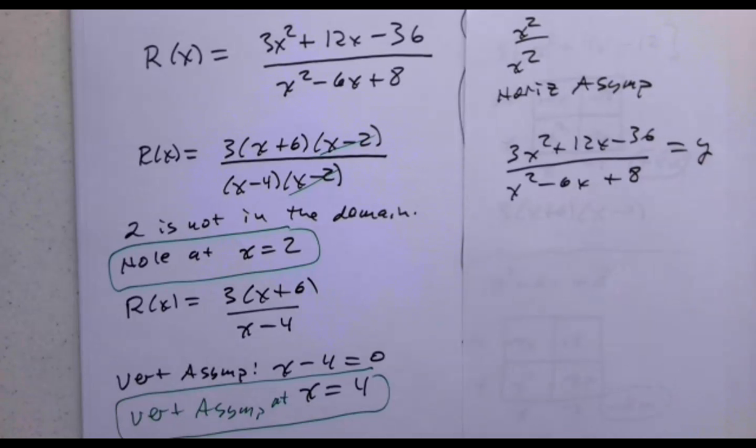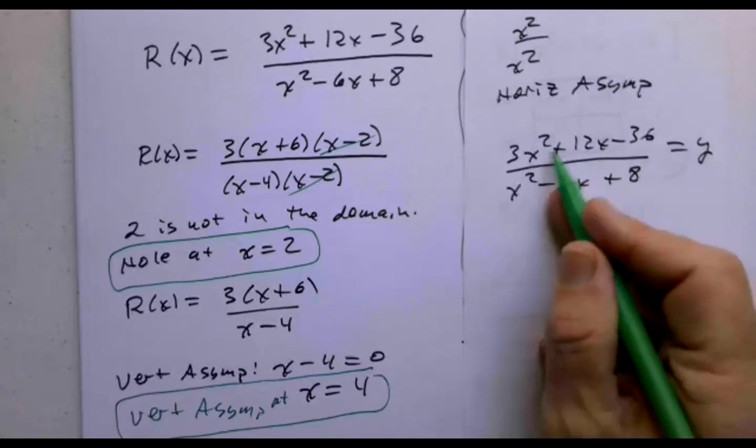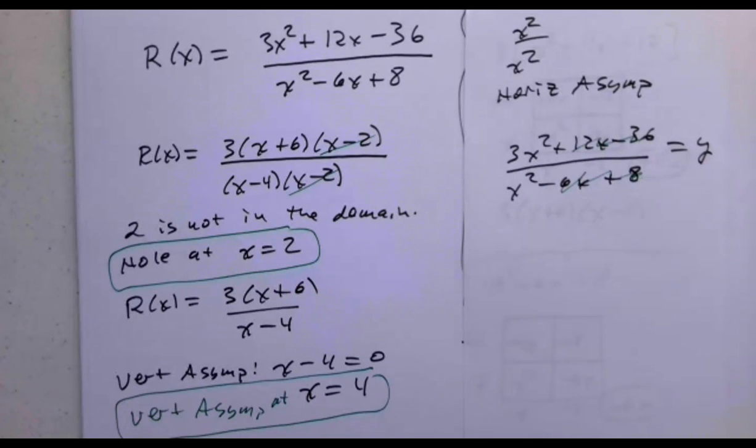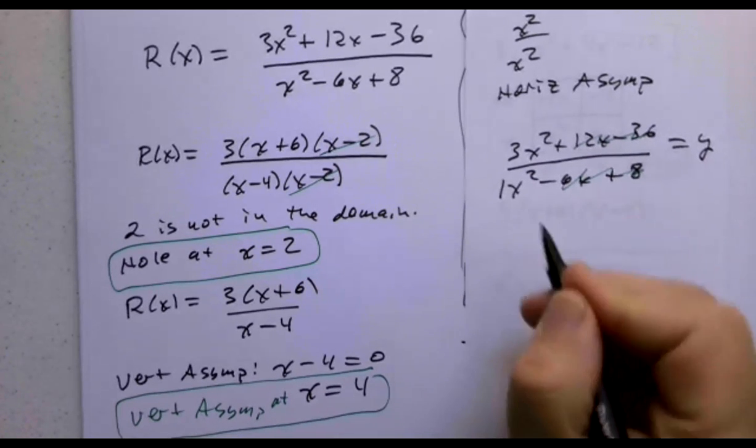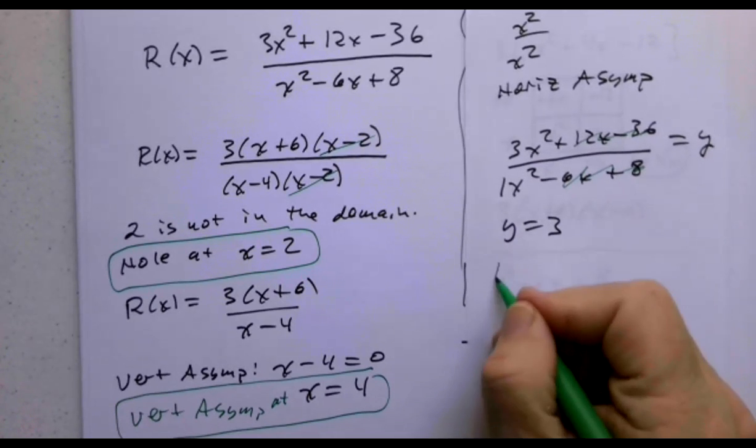We ignore the lower terms. The lower terms aren't really an issue for us because once the numbers get very large, like 1000, 12,000 minus 36 is nothing compared to 3 million. So 3x squared divided by 1x squared gives me a horizontal asymptote of y equals 3.